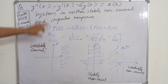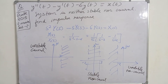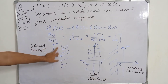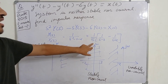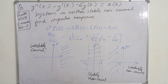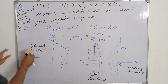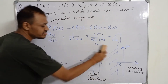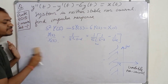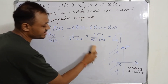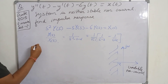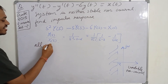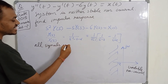Since it is given that the system is neither stable nor causal, only the third option satisfies our criteria. In this case, the ROC is left of the leftmost pole (left of s=-2), the ROC does not include the j-omega axis so the system is unstable, and it is also non-causal. So the last ROC is the one that satisfies the given conditions.